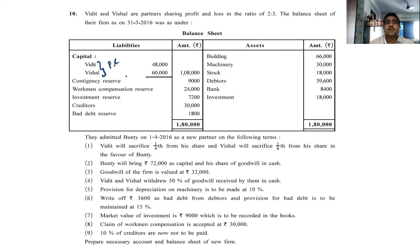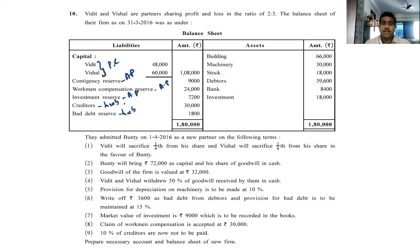Investment, if any point is there we have to do according to that, otherwise we can take it to accumulated profit. Creditors are 100% liability. Bad reserve, if any point is there we will do according to that, or we can write in liability or deduct from the data. Building, machine, stock, data — these are all assets. Bank we write in cash bank debit side. Investment is an asset.